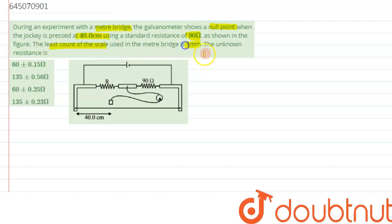So it can measure up to the least value of 1 mm. The unknown resistance is what we need to calculate in terms of errors, as we can see in the options.